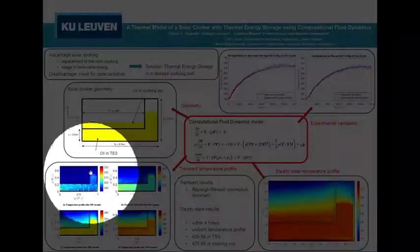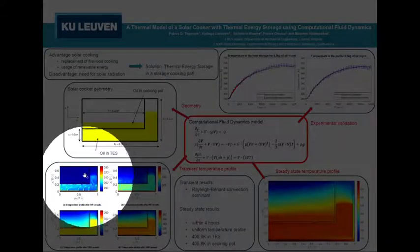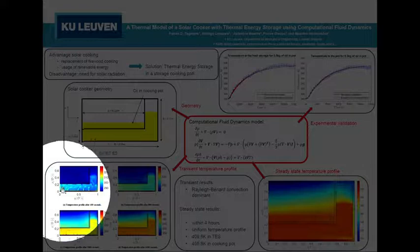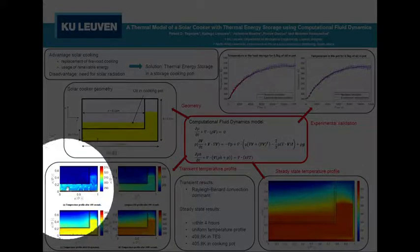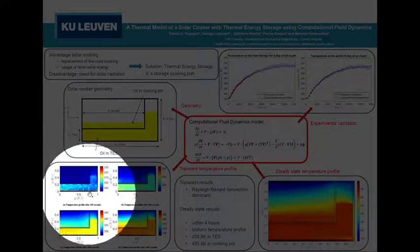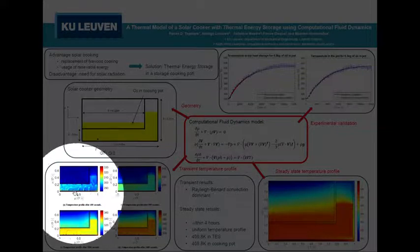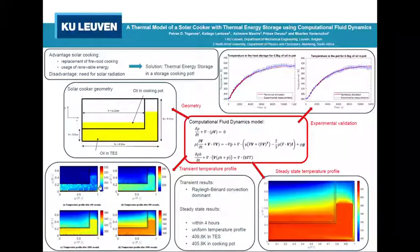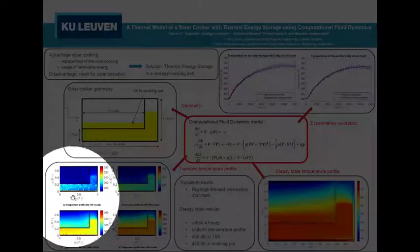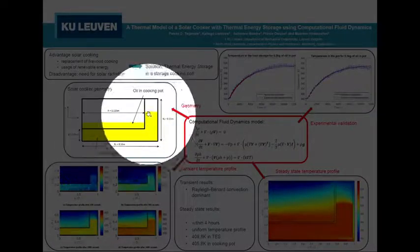So we see initially the cooking pot is quite low in temperature. And you can see here these Rayleigh-Bernard convection cells, which are created because the bottom of the cooker is heated up. It reduces the density and the viscosity near the bottom in the oil of the thermal energy storage system.